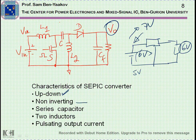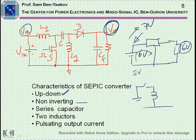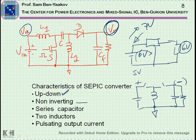It's non-inverting. Non-inverting means that the polarity of the output is the same as the input. This is also very good, because in many applications if you have a battery or a source you want the output to be of the same polarity. We have the buck-boost converter which also has the up-down capability, but the output is negative — not very useful in many applications. So the non-inverting feature is also a very good feature.